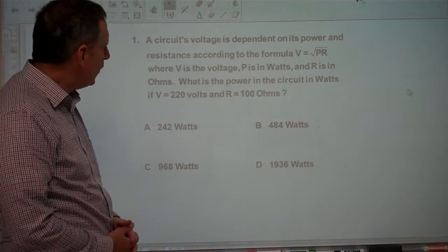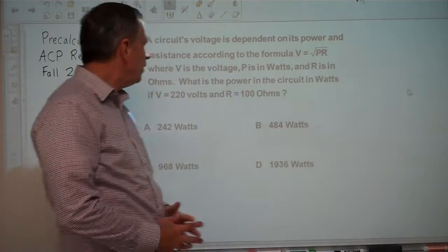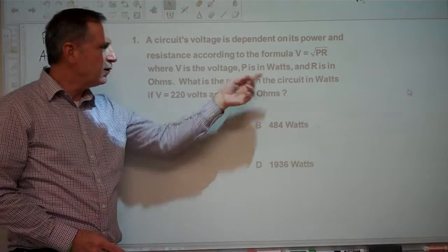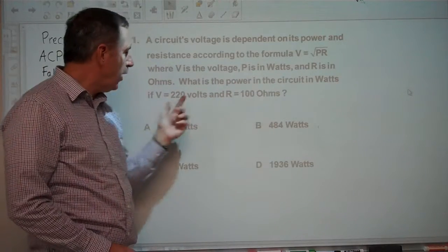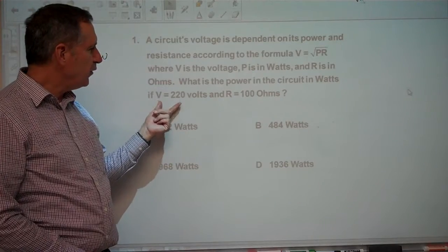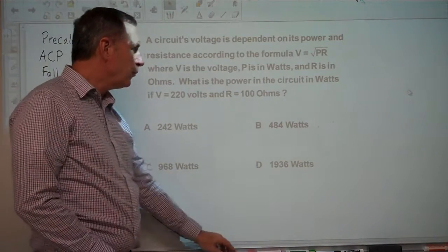A circuit's voltage is dependent on its power and resistance according to the formula V equals square root of PR, where V is the voltage, P is in watts, and R is in ohms. What is the power in the circuit in watts if V equals 220 volts and R equals 100 ohms?